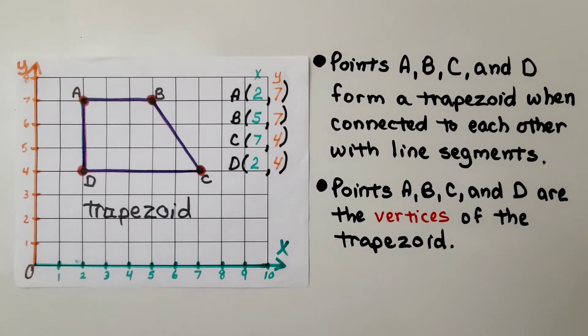Points A, B, C, and D form a trapezoid when connected to each other with line segments. Points A, B, C, and D are the vertices of a trapezoid.